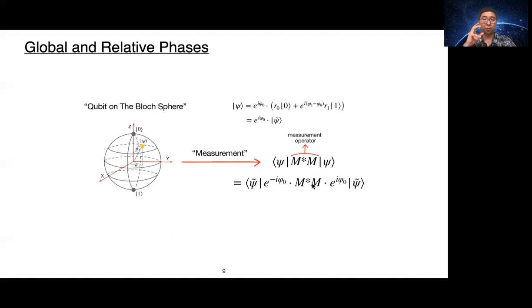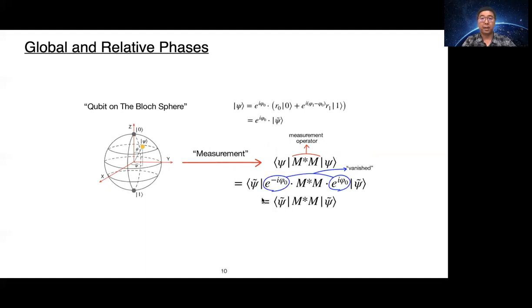We substitute quantum state psi with the e to the i phi 0 psi tilde. And this bra side is conjugate transpose of psi. It is replaced by conjugate transpose of e to the i phi 0 psi tilde. Then it shows that these global phases have disappeared. So the qubit psi and psi tilde are same up to global phase factor. So there's no observable effect.